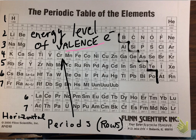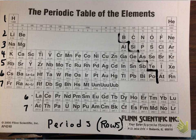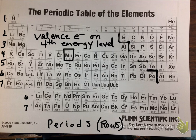Valence electrons are of particular importance because these are the electrons involved in chemical reactions. For example, if we take the element manganese, we see that it is located in period 4. So its valence electrons will be located on the fourth energy level.